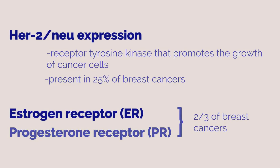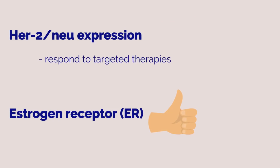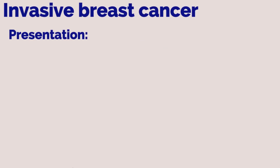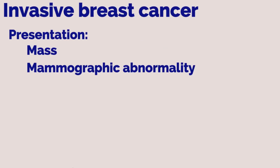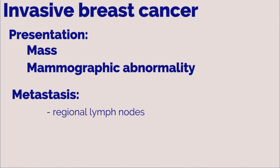A tumor that is ER positive has a better prognosis than ER negative. HER2-neu cancers are generally highly aggressive but respond to targeted therapies and have good prognosis. Breast cancer usually presents as a breast mass or mammographic abnormality. Spread is to regional lymph nodes and can metastasize to the brain, bone, liver, lung, and ovaries.